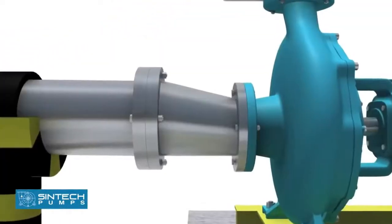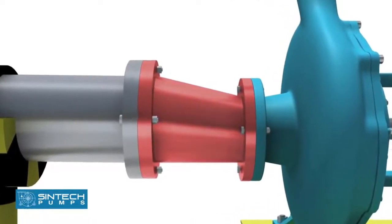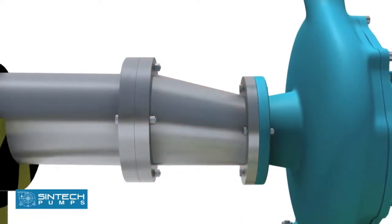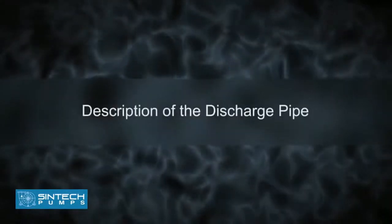The reducer joining the straight length of the pipe in the pump line should be an eccentric reducer with the inclined side of the reducer as the top side. Description of the discharge pipe.